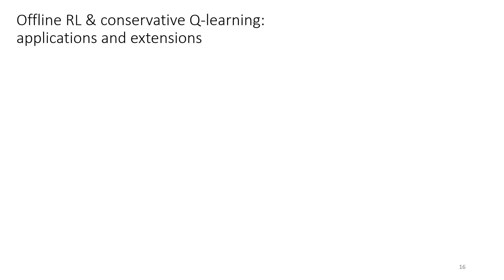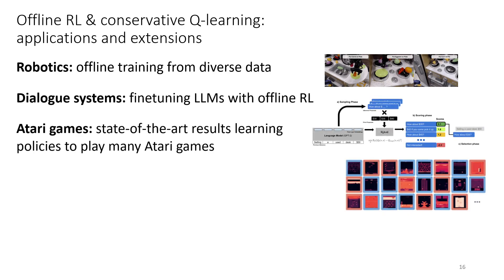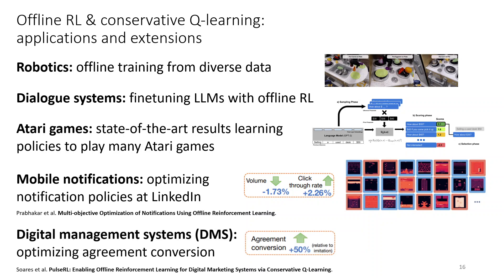There are many other applications and extensions of conservative Q-learning and offline RL in general. Prior work has used conservative Q-learning for a variety of applications: LinkedIn used it for optimizing notification policies, attaining improvements in click-through rate while reducing the number of notifications needed. It's been used for digital marketing systems for user conversion, also attaining very large improvements over naive strategies that simply imitate the good parts of the data. So the method really works and it's been used extensively in practice.